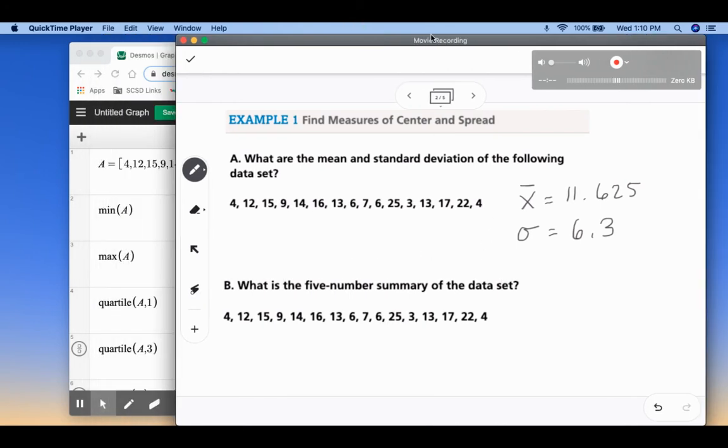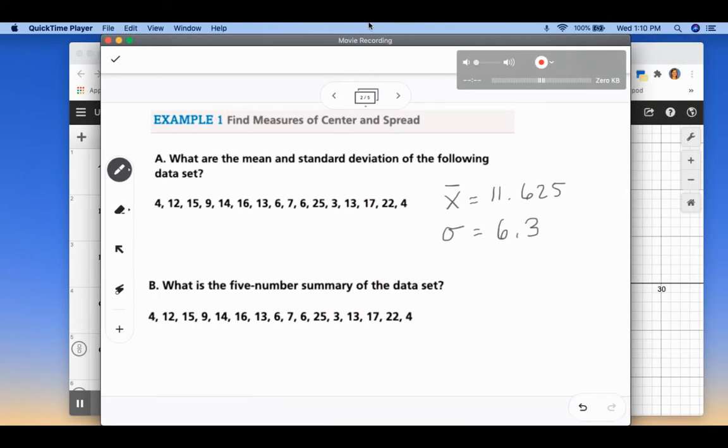So we found that our min was 3. We found that our max was 25. We found our Q1 to be 6. Our Q3 is 15.5. And our median was 12.5. So if we wanted to do this by hand, just to refresh your memory, you would have to take this list and order them from least to greatest. And then you'd find the lowest number, you'd find the highest number, you'd find the middle value. Then the Q1 is the median of the lower half and the Q3 is the median of the upper half.